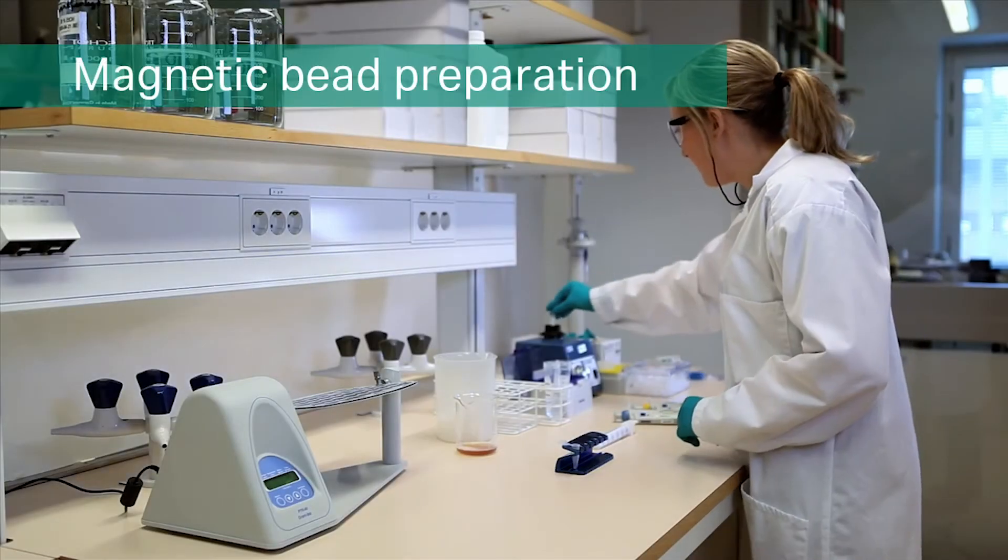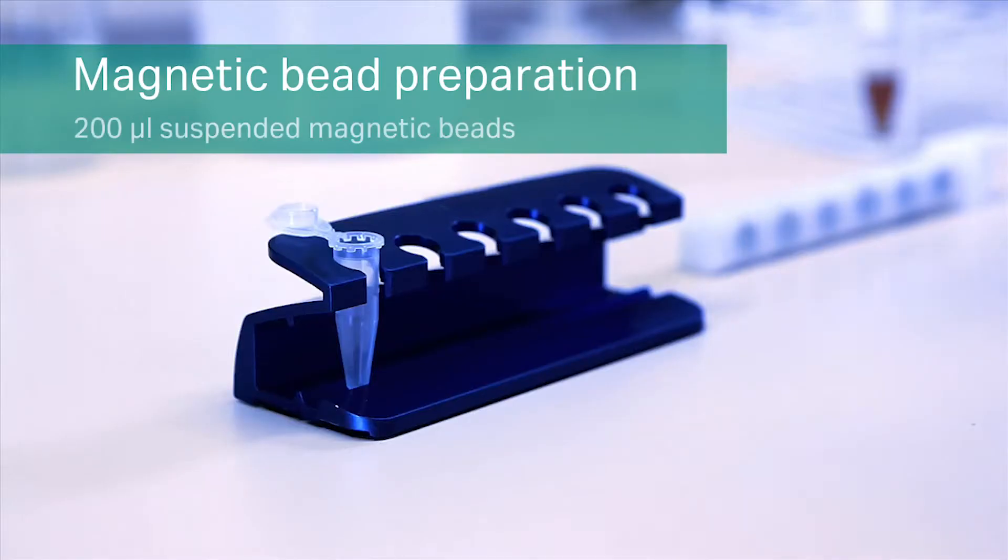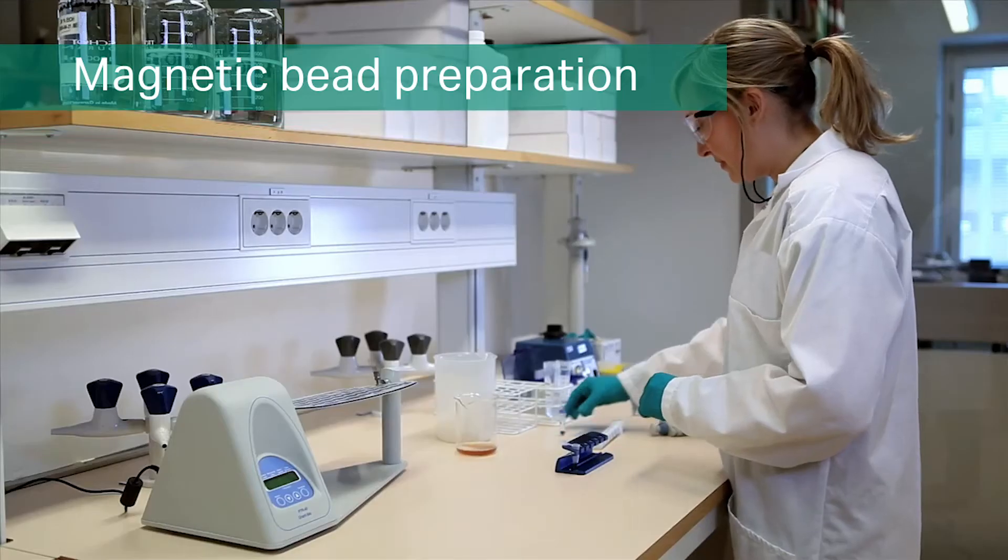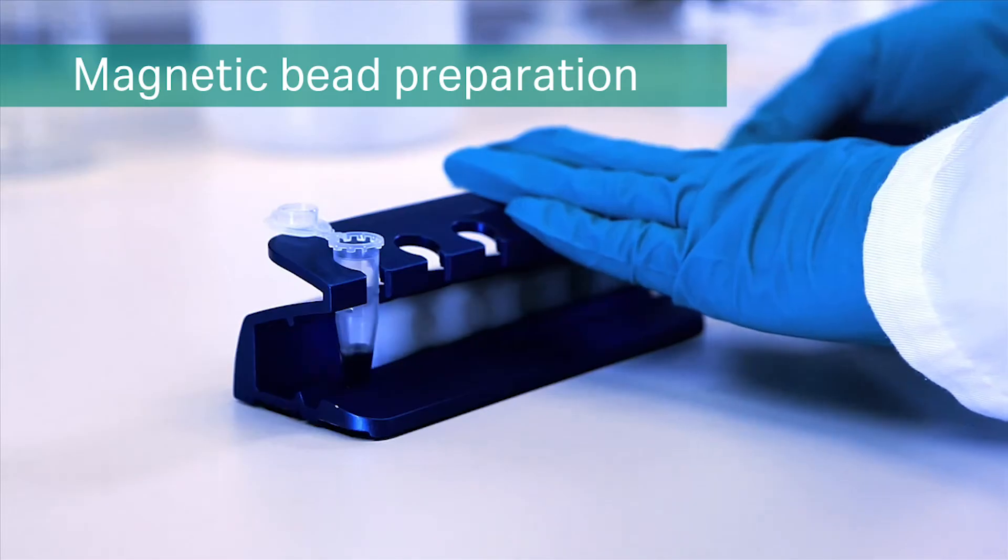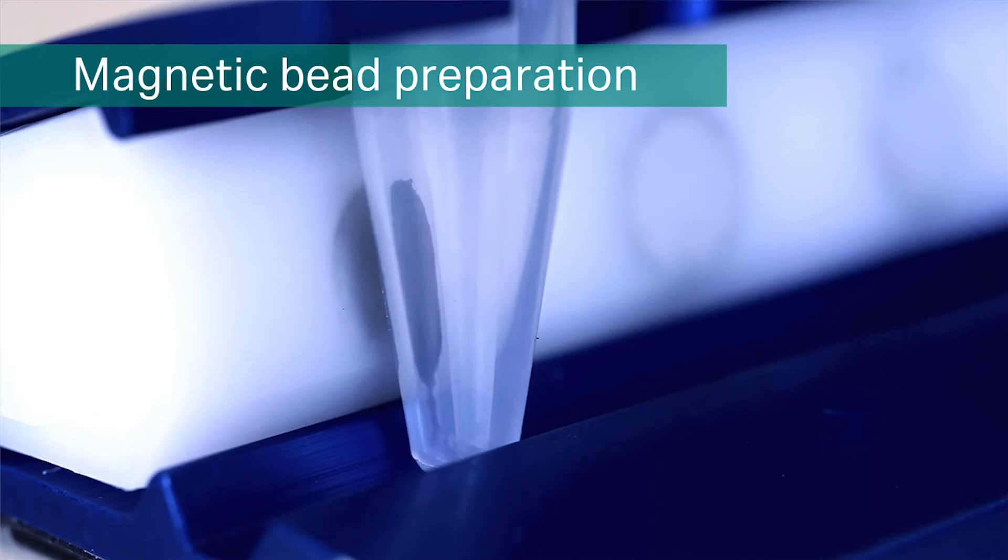Start by mixing the medium slurry thoroughly by vortexing. Dispense 200 microliters of suspended magnetic beads into an Eppendorf tube and place it in the magnetic rack. Insert the magnet in the magnetic rack before removing the storage solution.